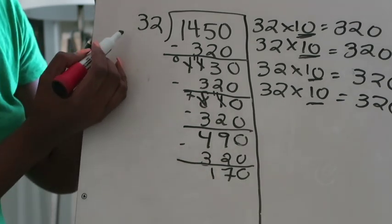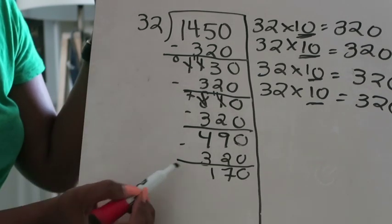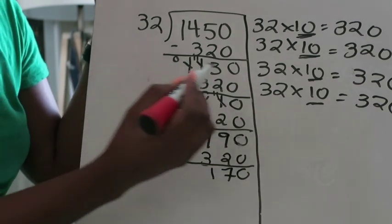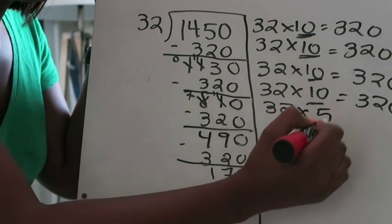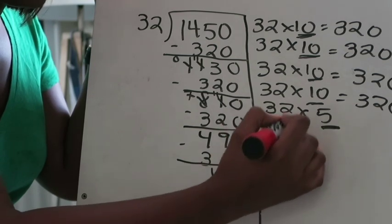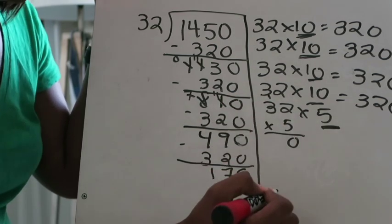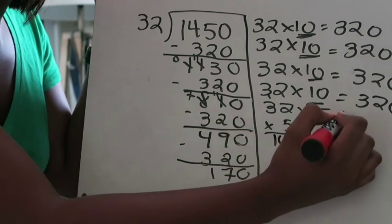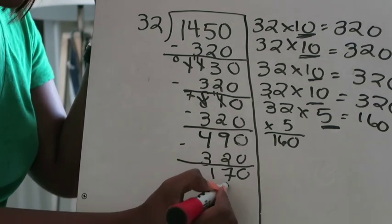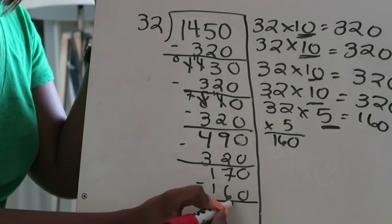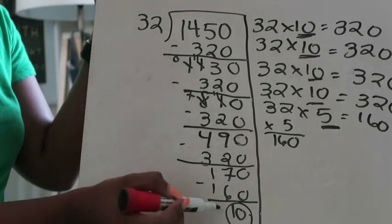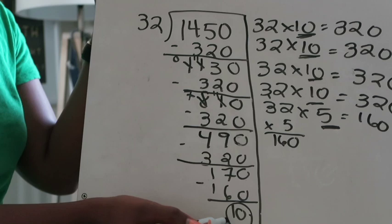I'm going to go ahead and say, well, I need 170 and 170 is close to half of 320. So I'm going to multiply 32 by 5. 32 times 5, underline that 5. I'm going to actually do the multiplication here. 5 times 2 is 10, 5 times 3 is 15 plus 1 is 16. So I know that's 160. I'm going to subtract out 160. 170 minus 160 is 10.